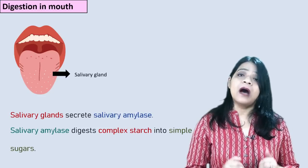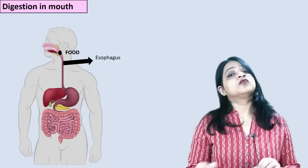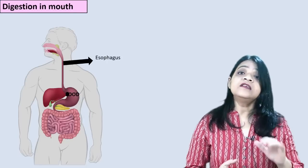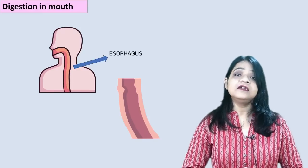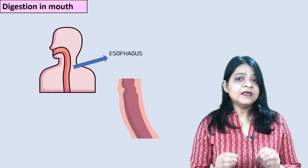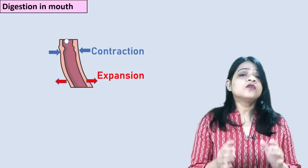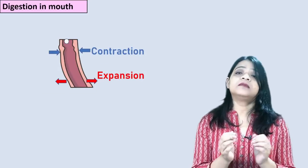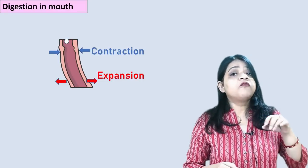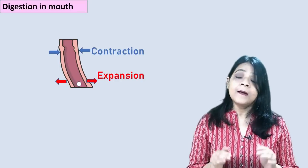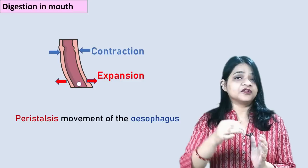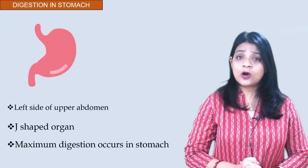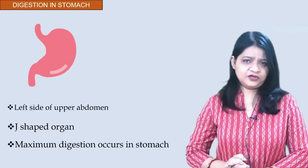From the mouth, the food needs to travel to the stomach. This food passes to the stomach via a food pipe which we call the esophagus. The esophagus is a muscular tube. Since muscles contract or expand, food travels to the stomach via the esophagus by peristalsis movement — that is, contraction and expansion — so that food can easily pass into the stomach.